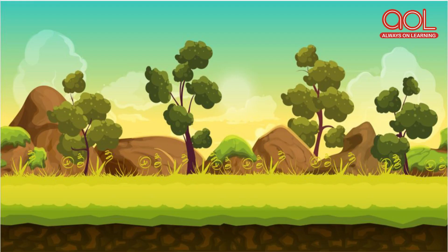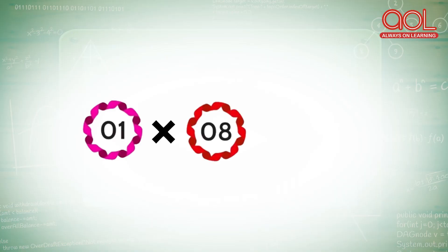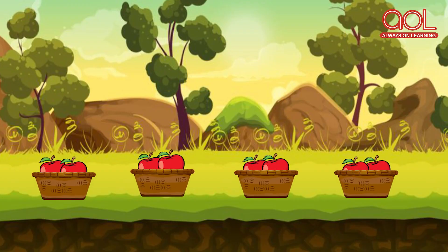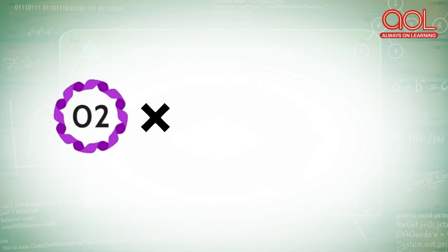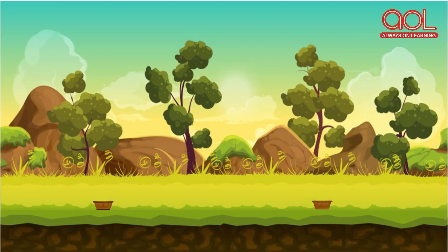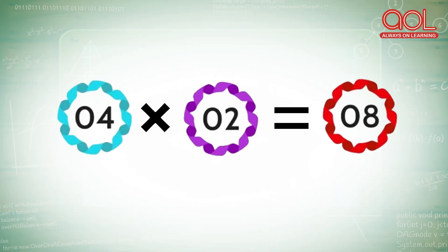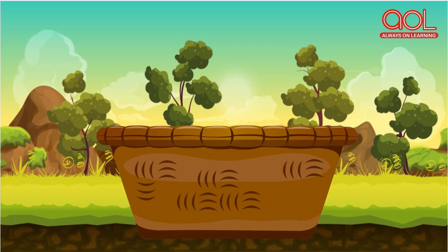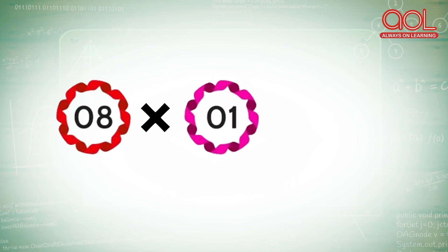Why do I write 1 into 8? Because I have placed 1 apple in 1 basket. So I can write it as 1 into 8 equal to 8. Next, I take 4 baskets and place 2 apples in each, so I can write it as 2 into 4 equal to 8. Next, I take 2 baskets and place 4 apples in each, so I can write it as 4 into 2 equal to 8. Next comes only 1 basket where I pour all the apples in it, and I can write it as 8 into 1 equal to 8.